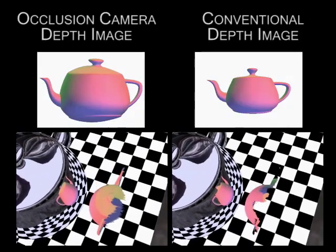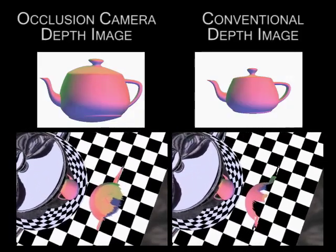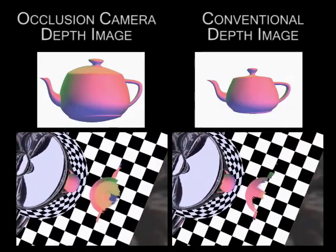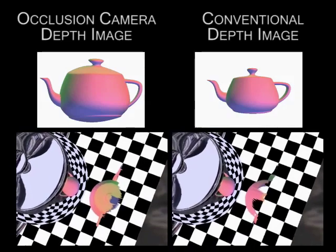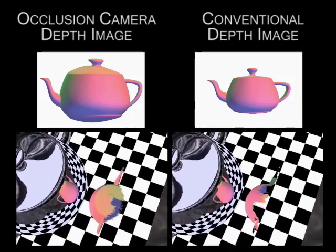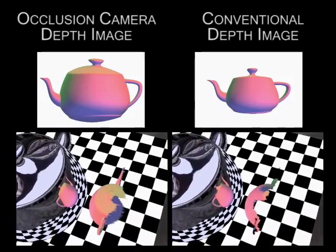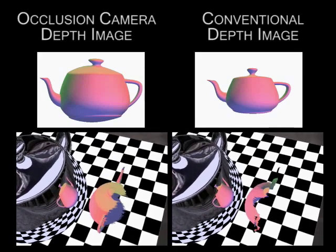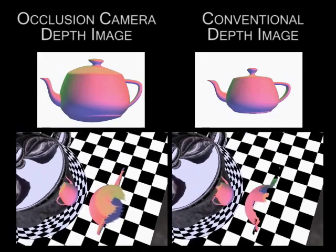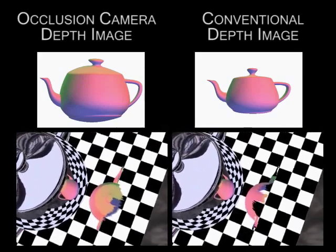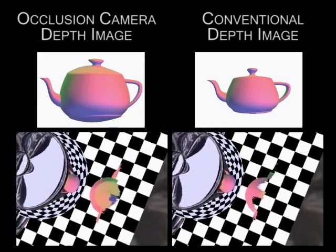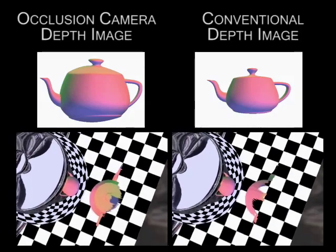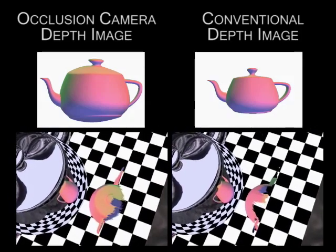Conventional depth images accelerate reflections by reducing the intersection of a reflected ray with geometry to a one-dimensional search. An occlusion camera depth image provides a better approximation of reflected geometry while the intersection remains one-dimensional.